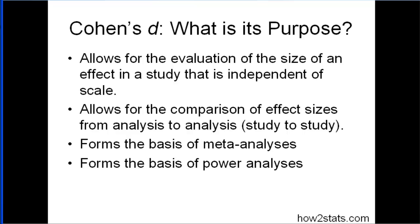And it forms the basis of power analyses. So very briefly, if you want to estimate the sample size that you're going to need to have an 80% chance of rejecting the null hypothesis, you need to specify how big of an effect you expect to observe. That's where Cohen's D comes in as one example.